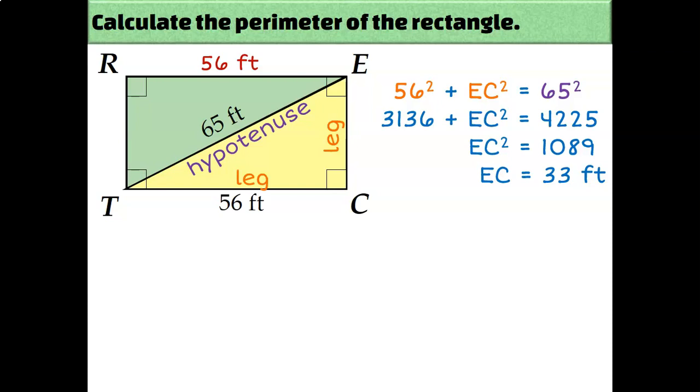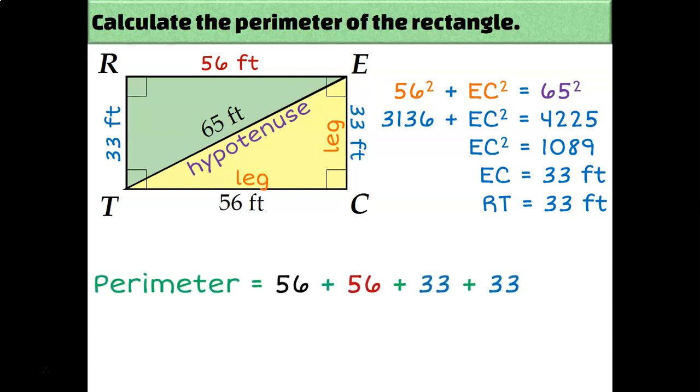Well, if EC is 33 feet, then RT must be 33 as well because opposite sides of rectangles are equal. So now I know all four of the lengths of the sides of this rectangle. So I can add them together and get to an answer of 178 feet for the perimeter of this rectangle.